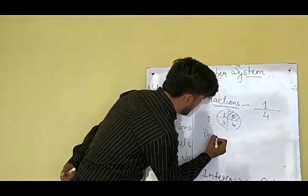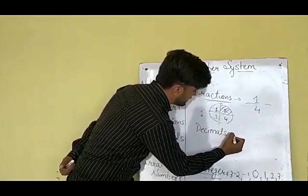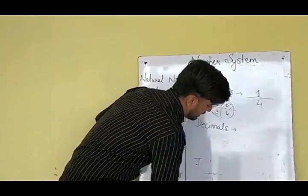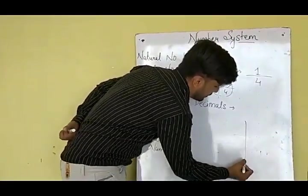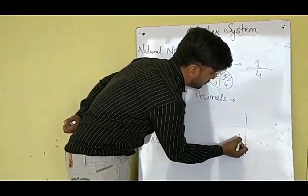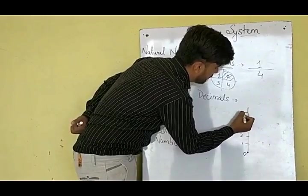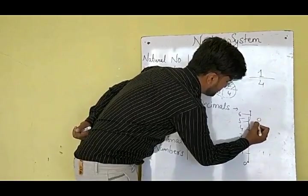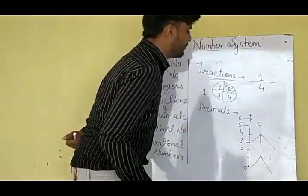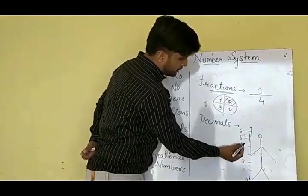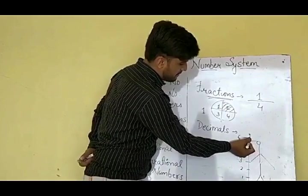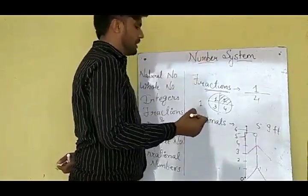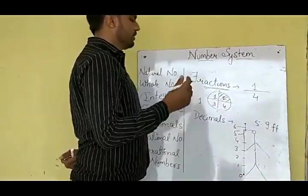Other than fractions, there is decimal. For more precise calculation, there was a need of decimals. For example, if I want to calculate my height — it is 0, 1 foot, 2, 3, 4, 5, and 6 — and I am standing somewhere here. What is my height? It is not exactly 1, 2, 3, 4, or 5. My height will be somewhere like 5.9 feet. So for more precise calculation, there was a need of decimals.